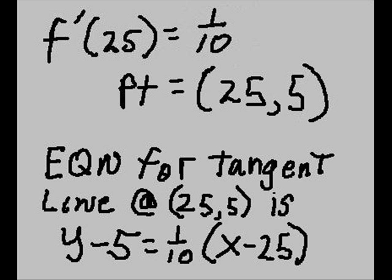y minus y1 equals m times x minus x1. That's the point-slope formula. We know that f prime of 25 equals 1 over 10, the point in question is (25, 5). So the equation for the tangent line at (25, 5) is y minus 5 equals 1 over 10 times x minus 25. 5 was the y1, 25 was the x1.